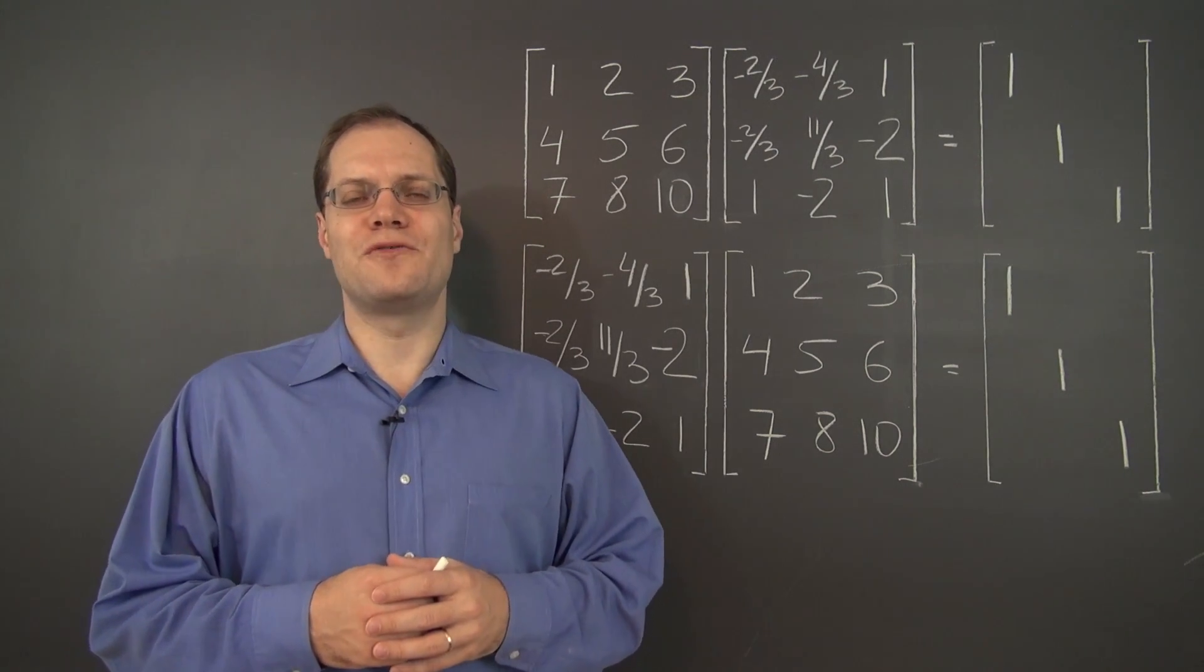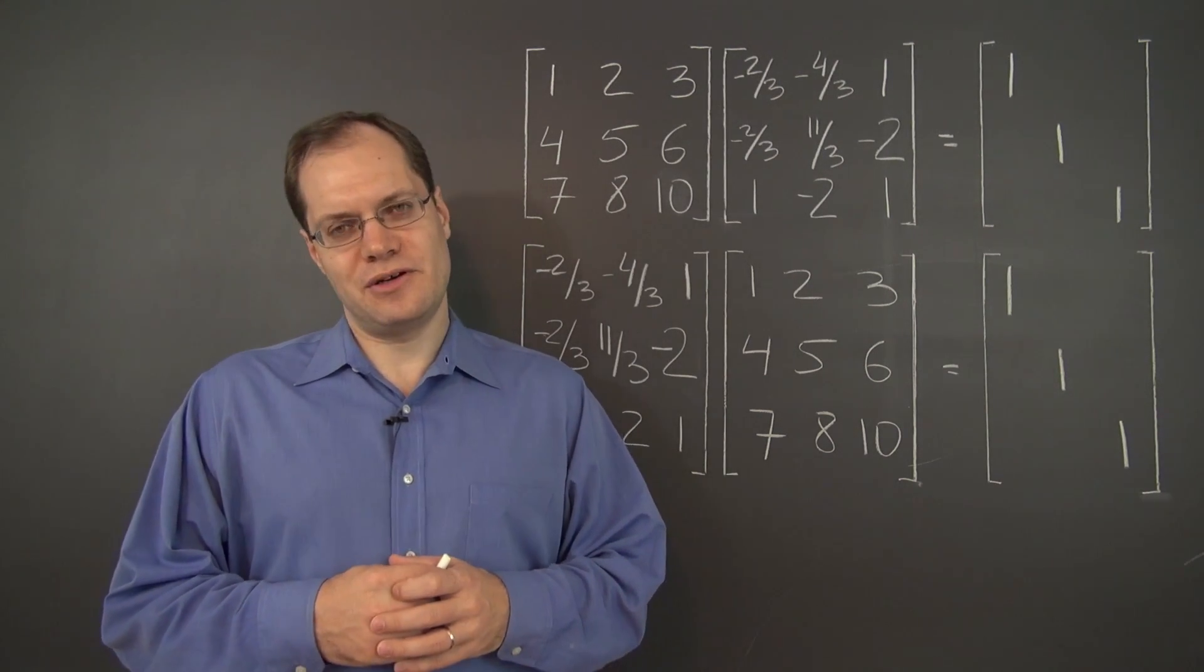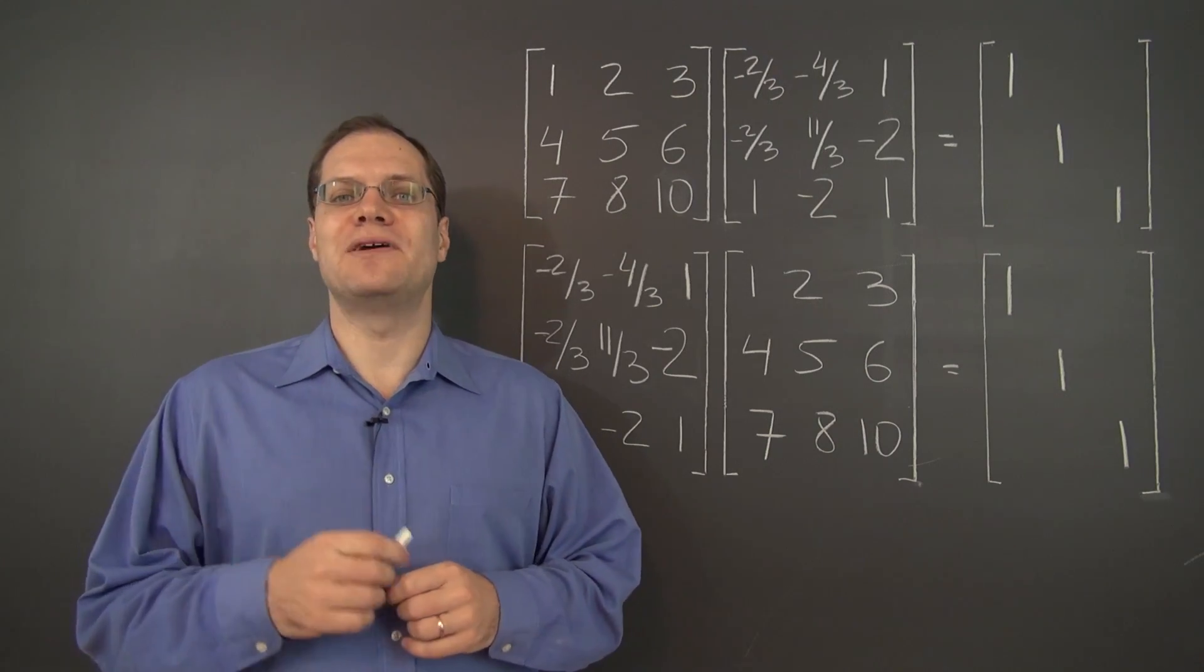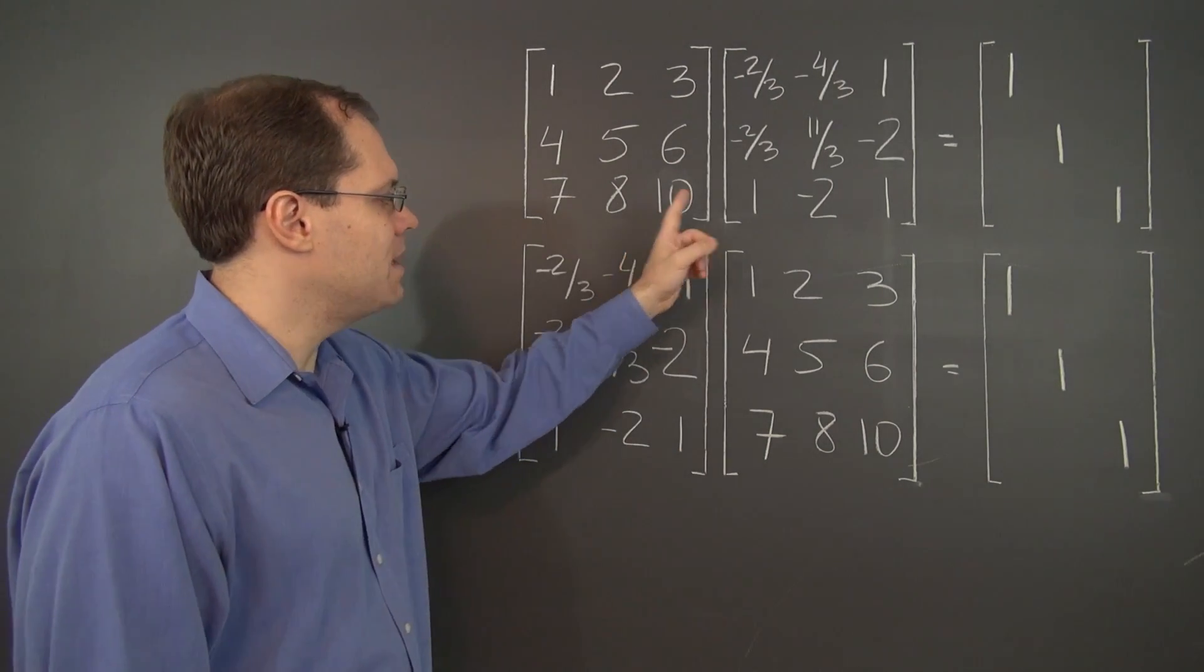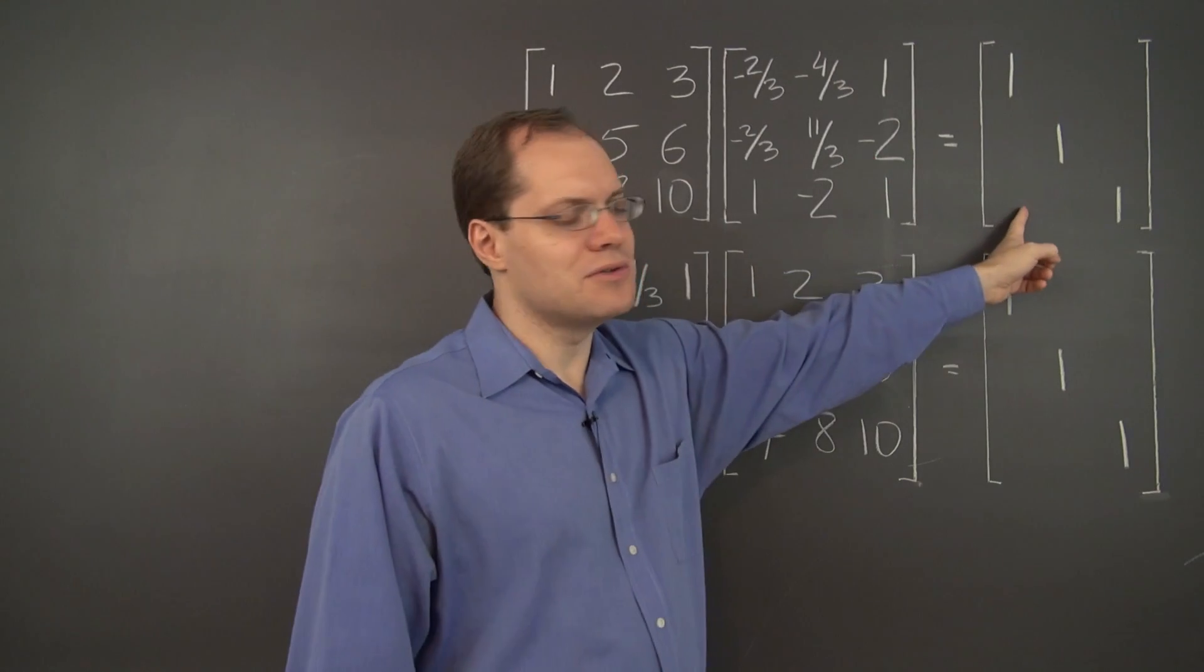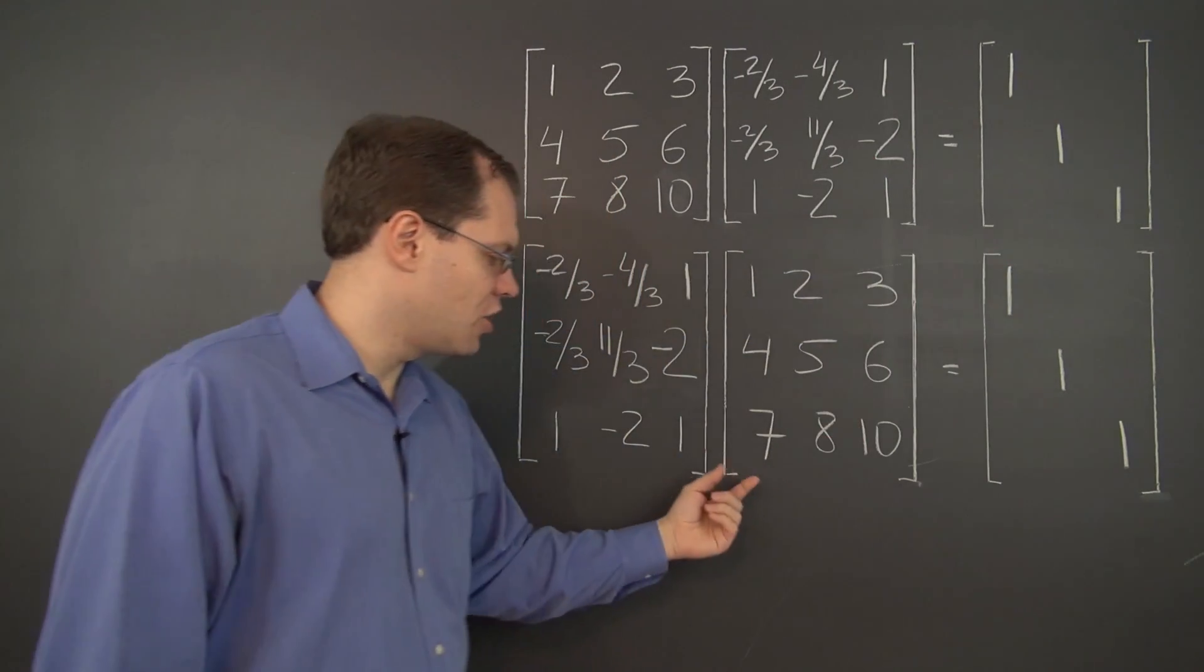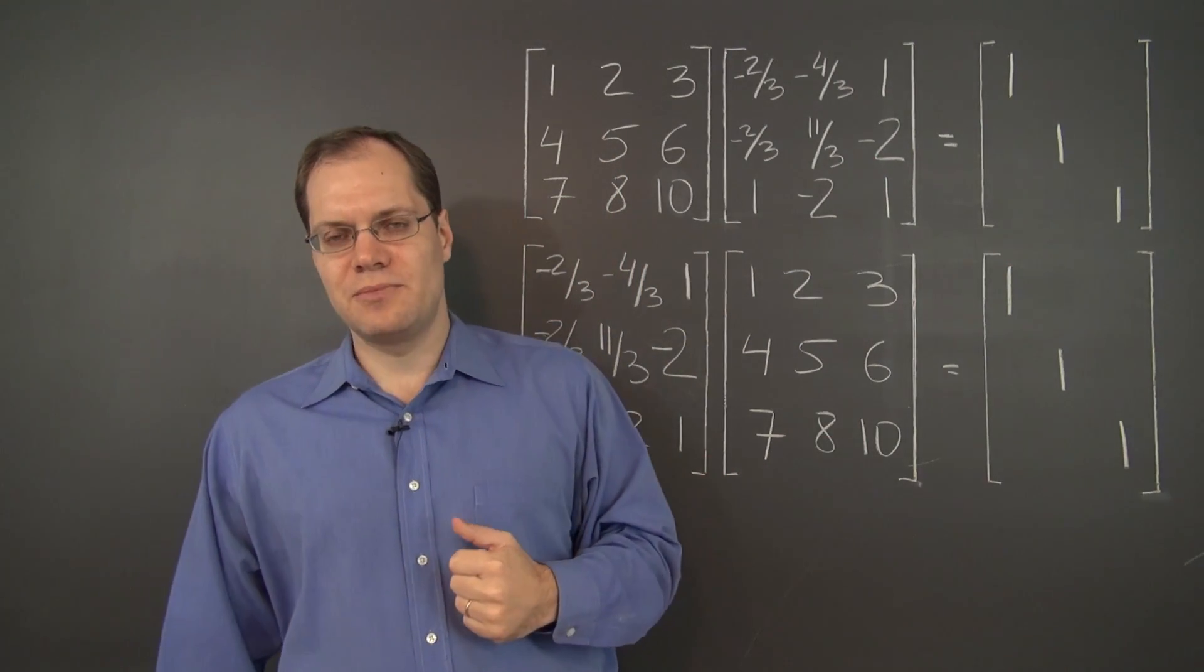This video is devoted to proving what I call the second little miracle of linear algebra. And that miracle is the fact that a matrix times its inverse equals the identity matrix regardless of the order in which the matrices are multiplied.